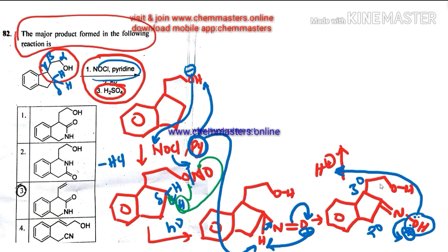Tertiary carbon migrates, or it has a greater migratory aptitude than when we compare it to secondary carbon. In that case, so it is going to rearrange onto nitrogen by means of electron deficient nitrogen in Beckmann rearrangement.